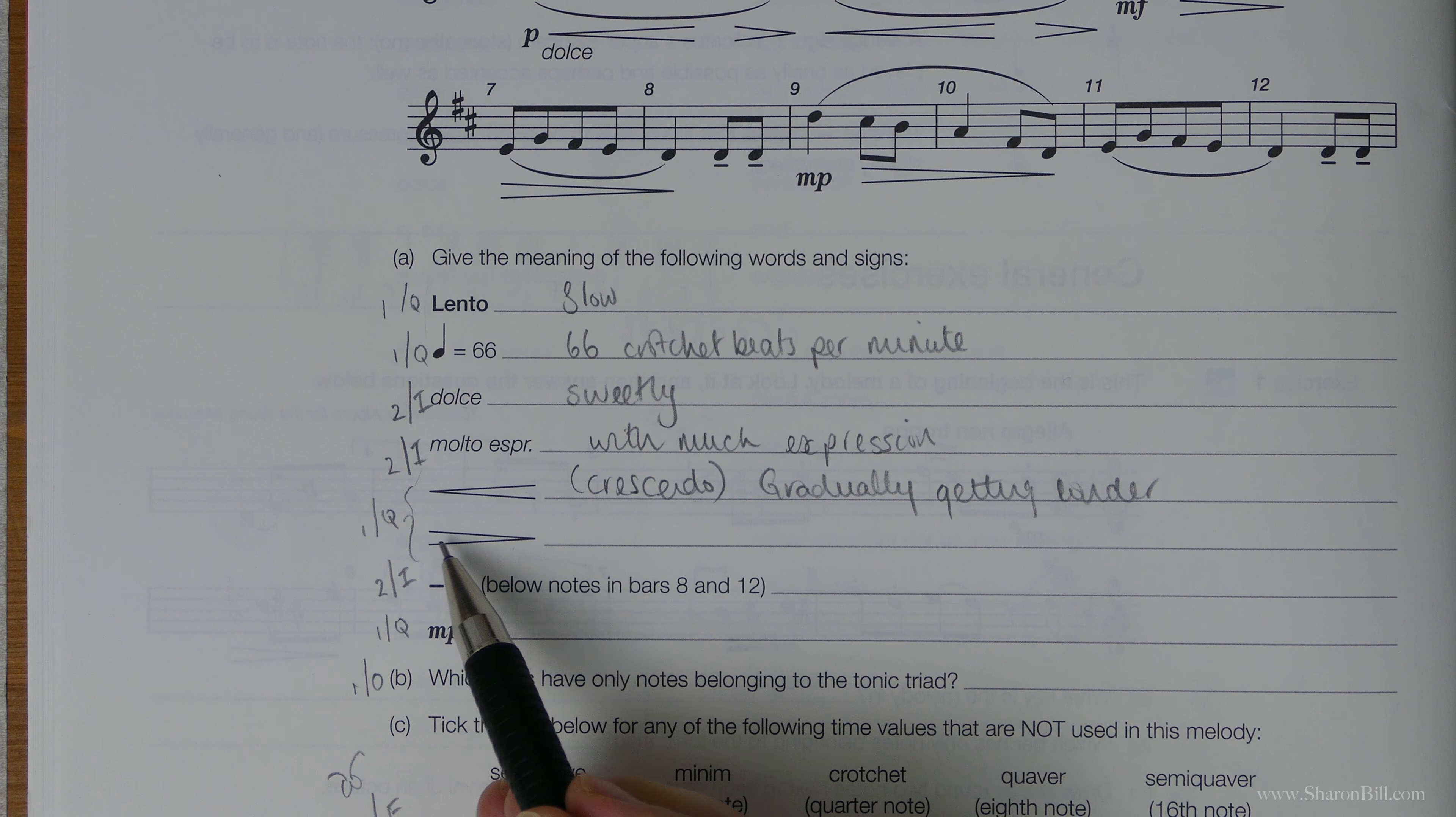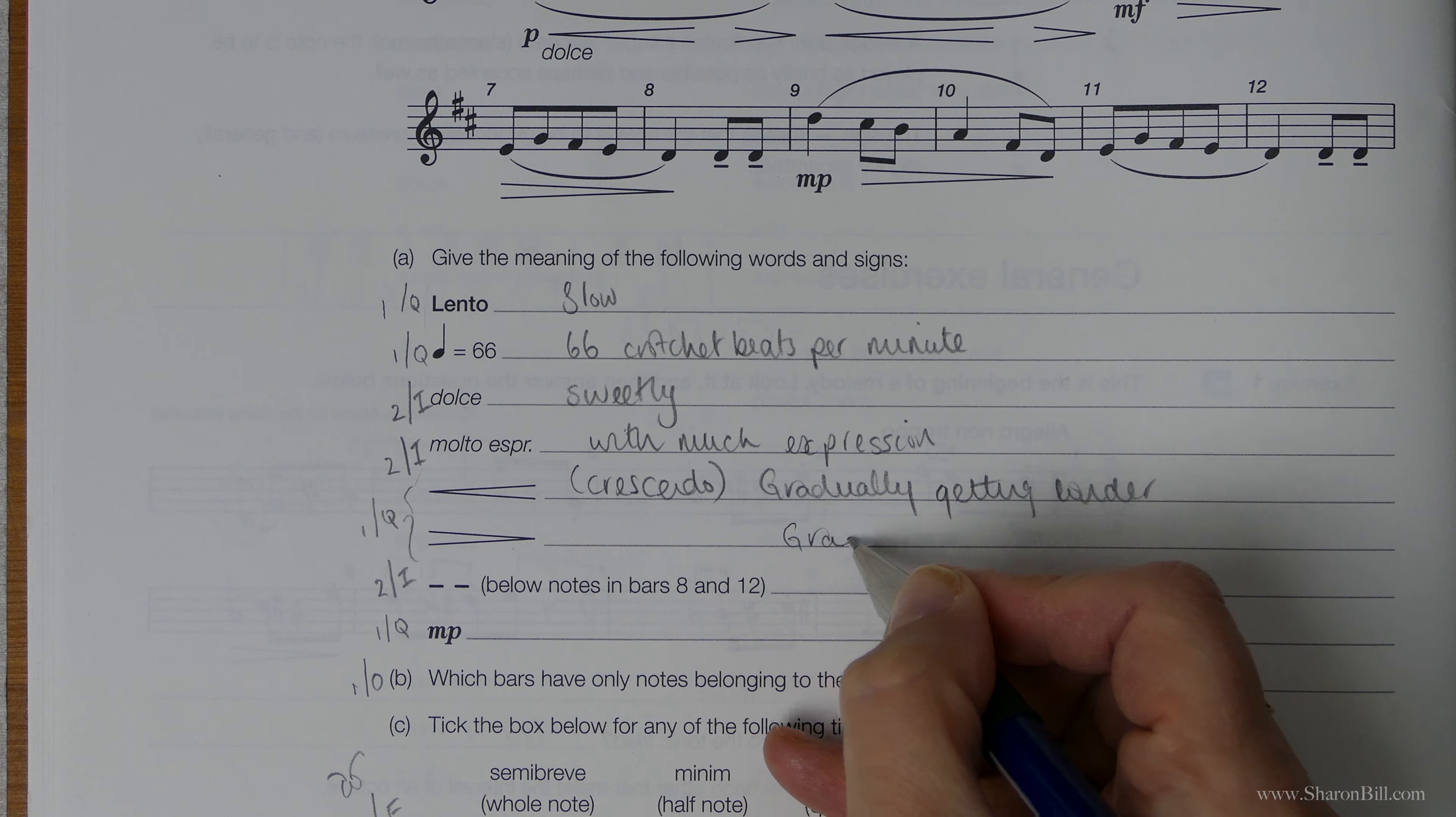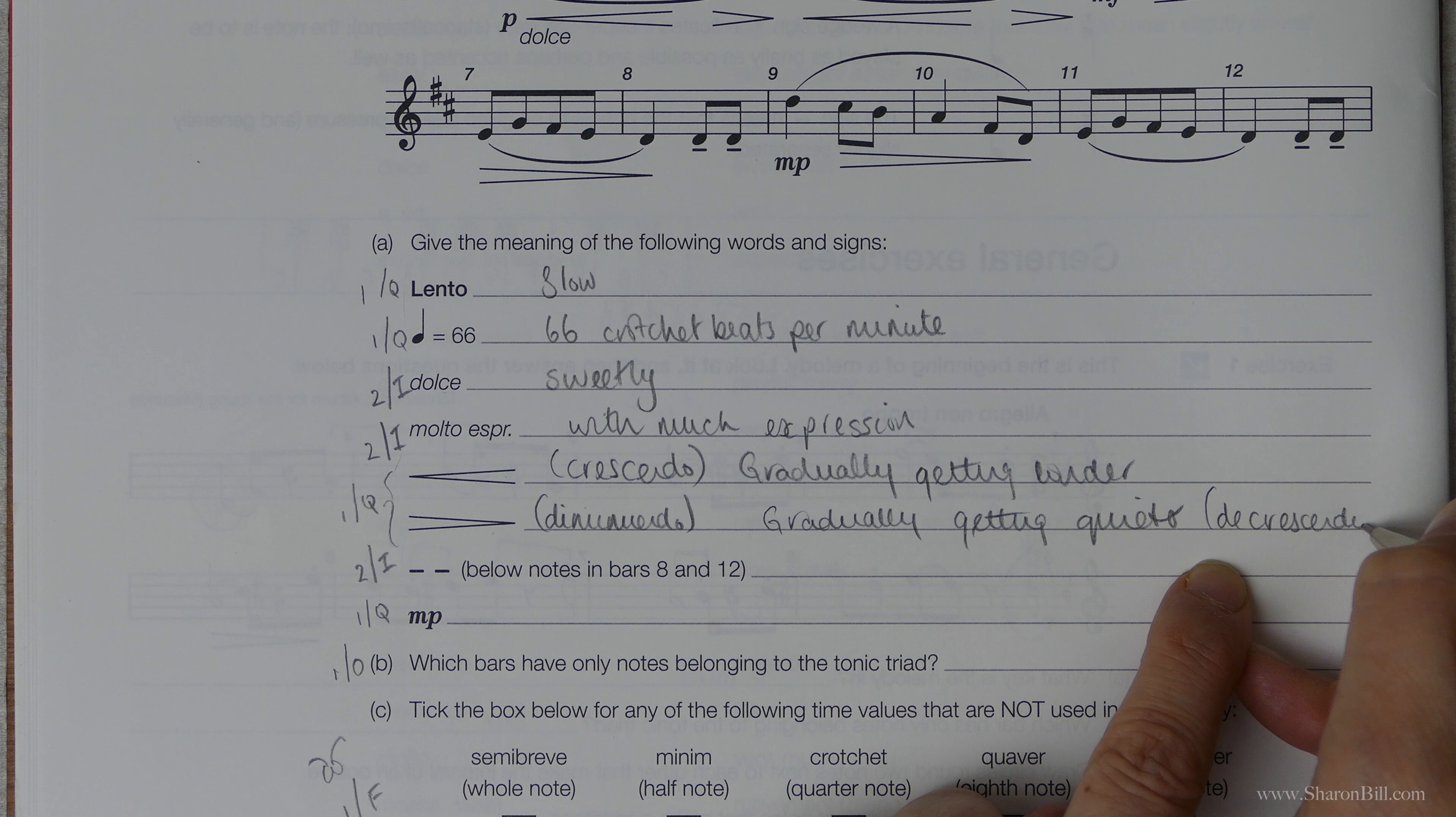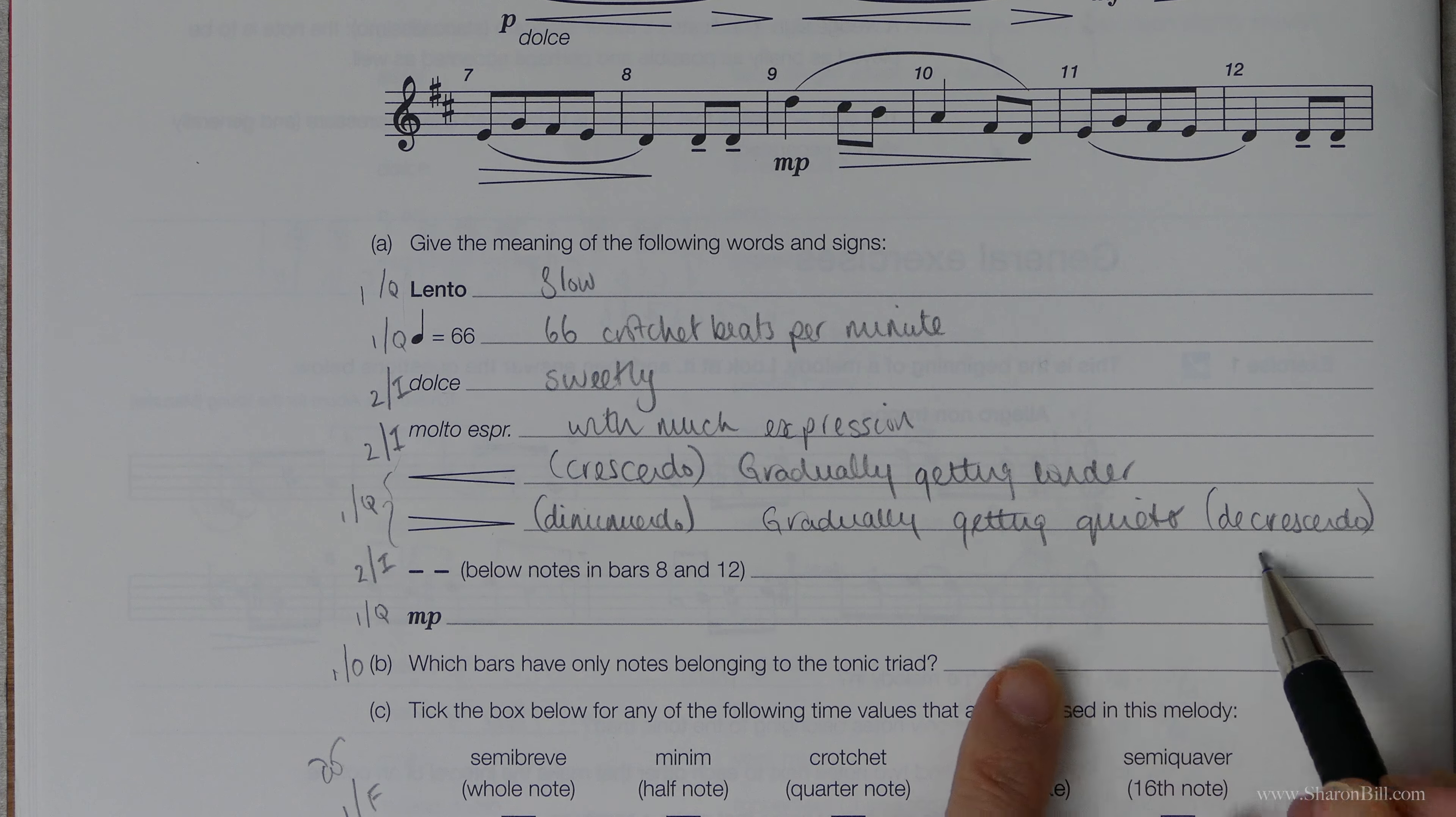And this is the exact opposite of it, so we can already guess that it means gradually getting quieter. And the Italian word for that is diminuendo. There is another way of saying that which is decrescendo. I don't particularly like that. It's like an un-crescendo. So decrescendo and diminuendo both mean the same, gradually getting quieter.